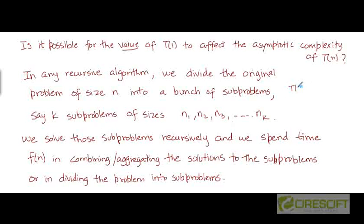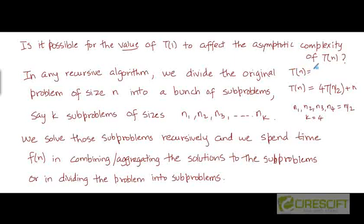For example, when we divide the original problem into four subproblems of half the size, n1, n2, n3, and n4 are all equal to n/2, and k is equal to 4. Another recurrence we saw was T(n) = T(n/3) + T(2n/3) + f(n), where the original problem is divided into two subproblems of sizes n/3 and 2n/3. So k equals 2 for this recurrence.